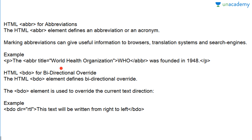Now let's read about bi-directional override. You can change the direction of your text in the browser. For changing that, you need to use the bdo tag. The bdo tag defines the bi-directional override — the bdo element is used to overwrite the current text direction. We use: &lt;bdo dir="rtl"&gt;This text will be written from right to left&lt;/bdo&gt;. RTL defines right to left. When you run this in your browser, the text is displayed reversed — for example, 'left to' appears as shown from right to left.